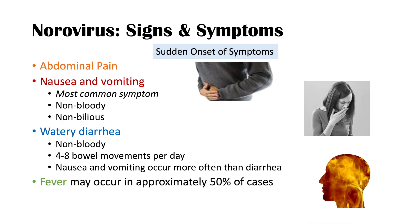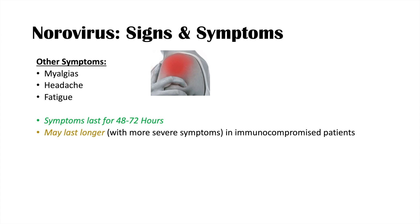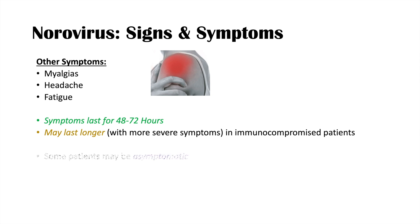Fever doesn't always occur — it's estimated to happen in approximately 50% of cases. Other symptoms include myalgias (achy muscles), headaches, and fatigue. Symptoms of the norovirus typically last about 48 to 72 hours, but may last longer in immunocompromised individuals, who also have more severe presentations. Approximately one in ten patients infected with norovirus are asymptomatic, though they can still shed the virus in their stool and spread the infection.